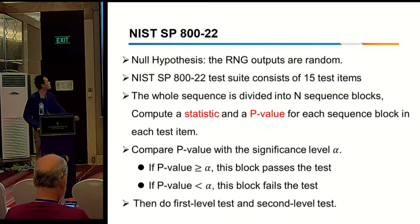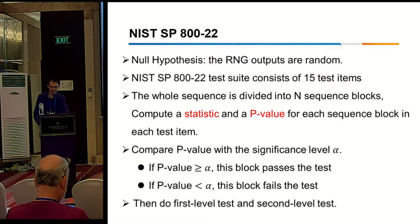First, we have to state the null hypothesis, and then we analyze the data under the null hypothesis. And finally, we show the solution to test the null hypothesis. And for this, the null hypothesis is the randomness of the sequence. There are 15 test items to verify the null hypothesis from different aspects. The whole sequence is divided into equal sequence blocks, and then we compute the statistic and the P-value for each sequence block in each test item, and we compare the P-value with the significance level alpha.